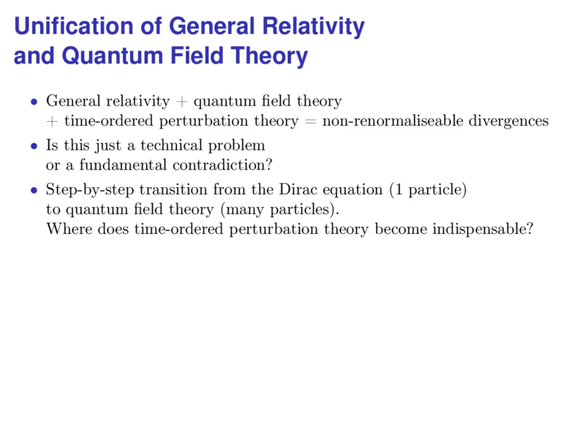My search for the contradiction starts at the point where both theories are still compatible. That's the Dirac equation for a single particle. This differential equation can still be solved by normal means, and we can apply the so-called spin connection to combine it with general relativity. It lacks, however, the essential aspect of quantum field theory, the transition from one particle to many particles, the so-called second quantization.